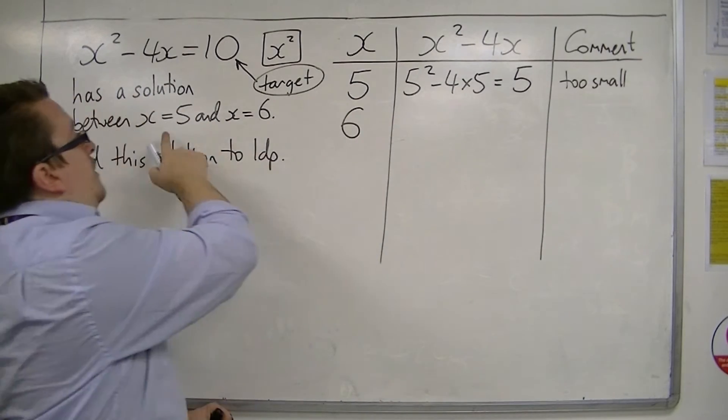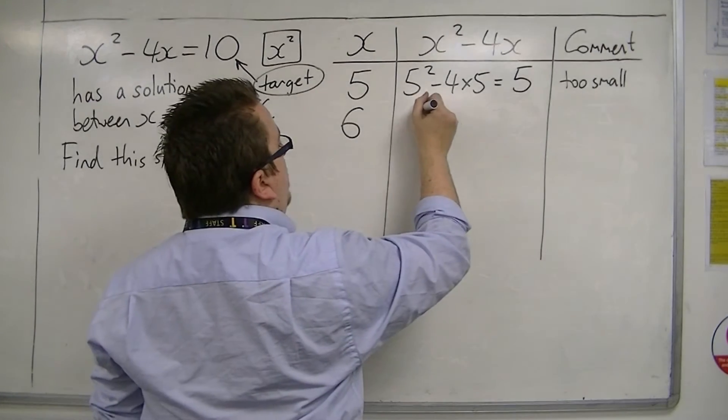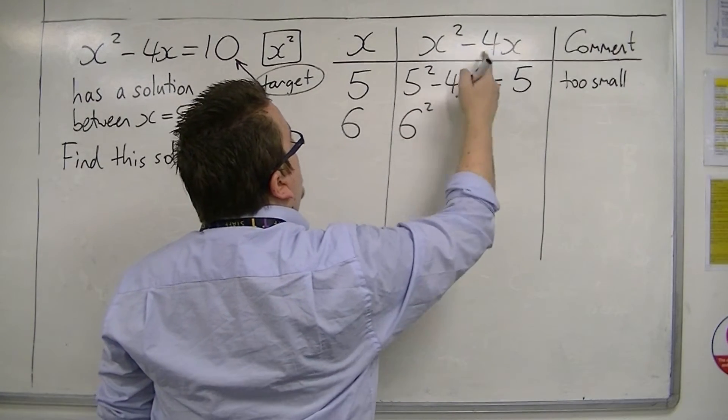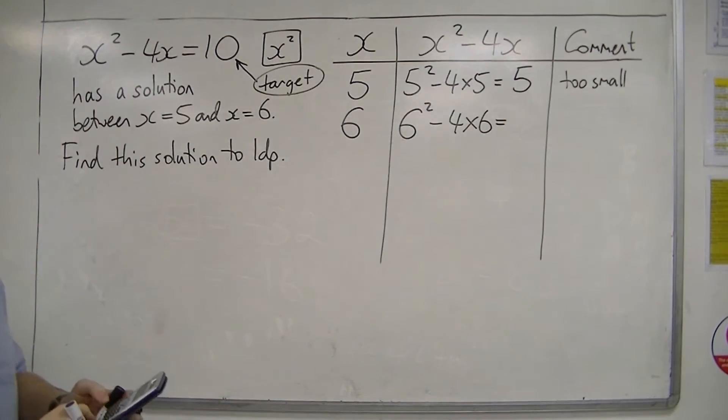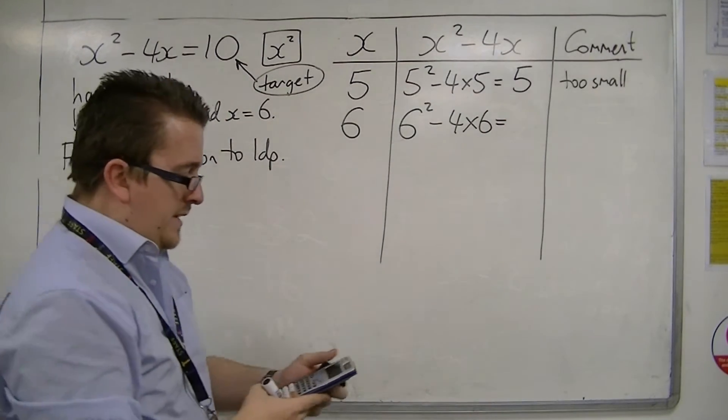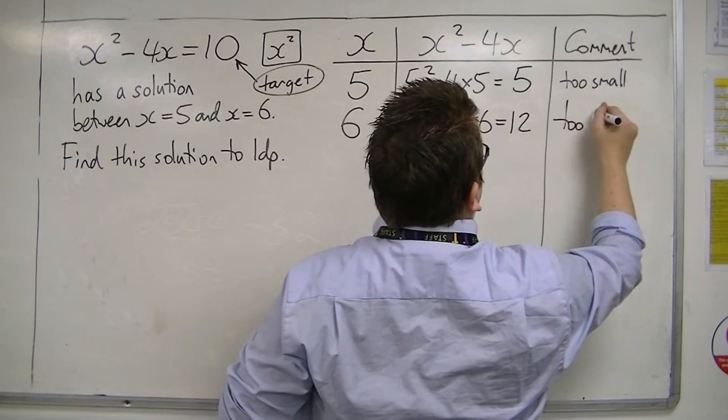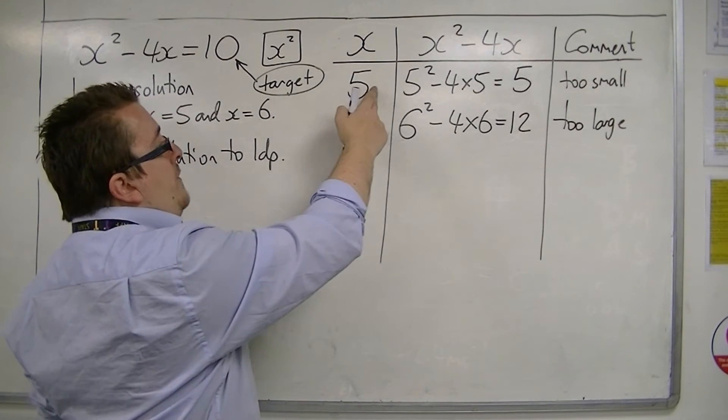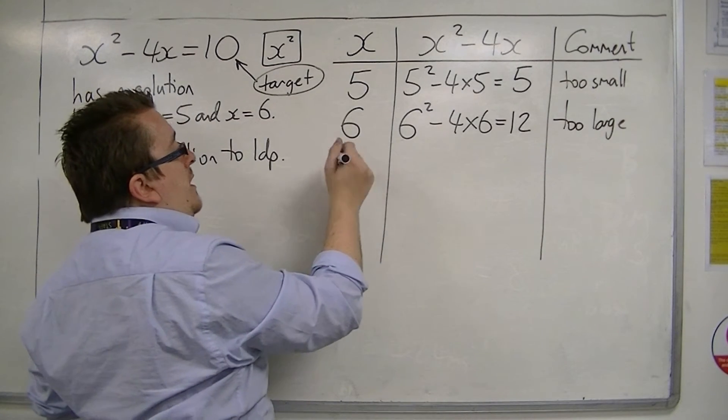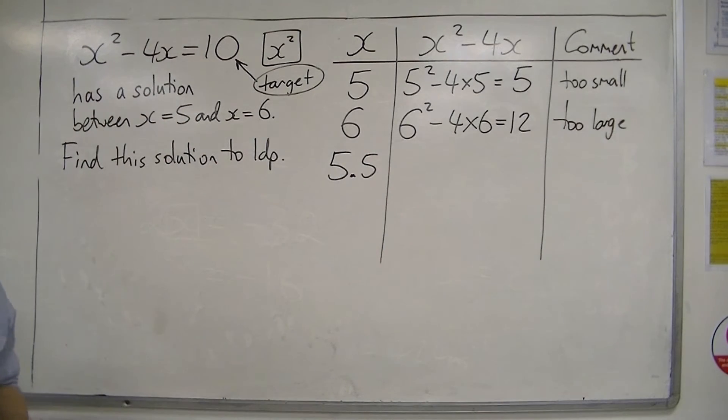So we're going to try 6. I'm going to try both these values first, just to show what we're working with. So 6 squared, take away 4 lots of 6. 6 squared, take away 4 times 6, is 12. Well, my target's 10, so that's too large. So if 5 is too small, 6 is too large, I'm going to try halfway through, 5.5.